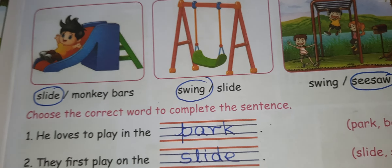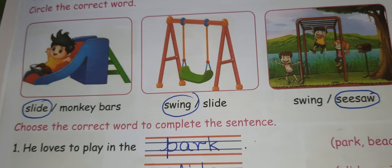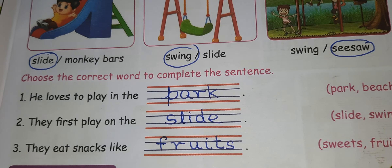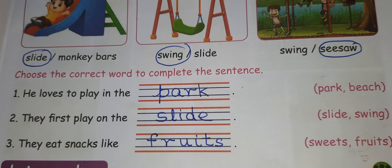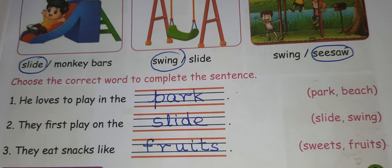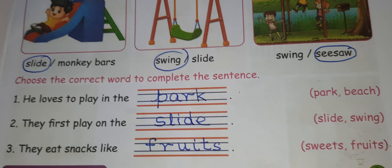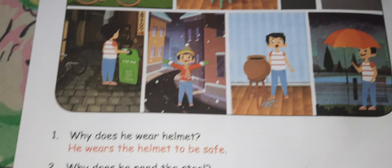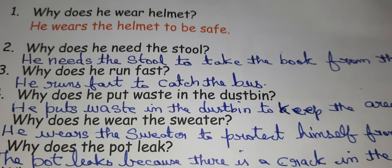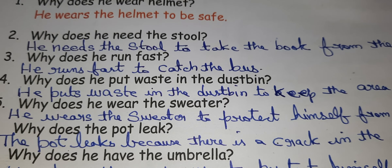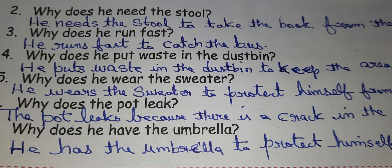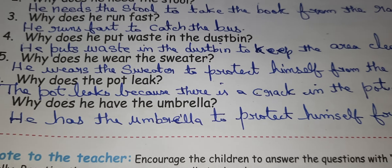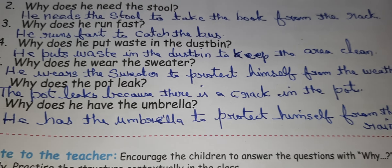In page number 121: slide, swing, seesaw. Choose the correct words to complete the sentences. He loves to play in the park. They first play on the slide. They eat snacks like fruits. Why does he wear the helmet? He wears the helmet to be safe. Why does he need the stool? He needs the stool to take the book from the rack. Why does he run fast? He runs fast to catch the bus. Why does he put the waste in the dustbin? He puts the waste in the dustbin to keep the area clean.